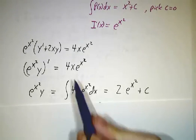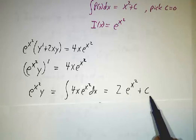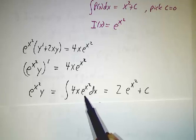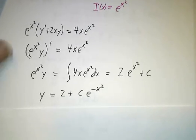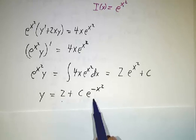So e to the x squared y is the integral of the right-hand side, which is 2e to the x squared plus a constant. Just do a u substitution here where u is x squared.